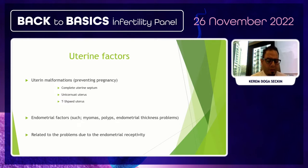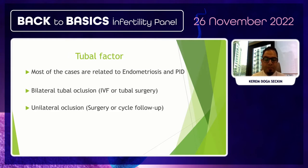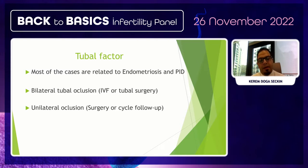Uterine factors include malformations such as uterine septum, unicornuate uterus, and T-shaped uterus that may prevent pregnancy. Surgical procedures can address these pathologies and allow achievement of pregnancy. Myomas, polyps, and endometrial problems related to endometrial receptivity can also be factors. For tubal factor, most cases are related to endometriosis and PID. Bilateral tubal occlusion warrants IVF or tubal surgery; unilateral occlusion can be managed with surgery or cycle follow-up.